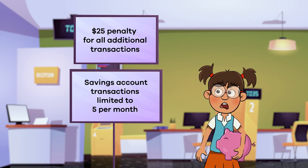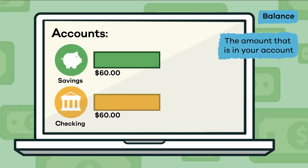If you use your savings account too often, the bank can actually charge you a fee. Another way a savings account is different from a checking account is that it pays you interest on your average balance — the amount that is in the account.